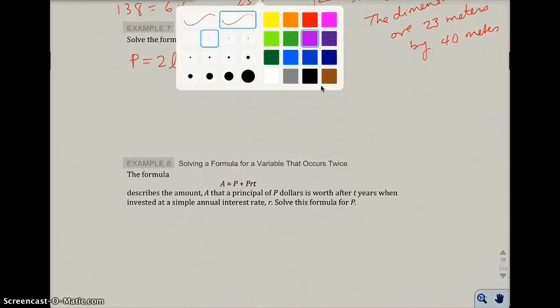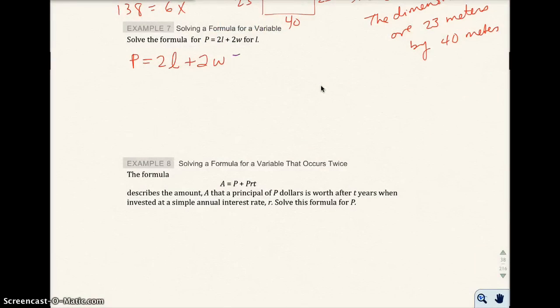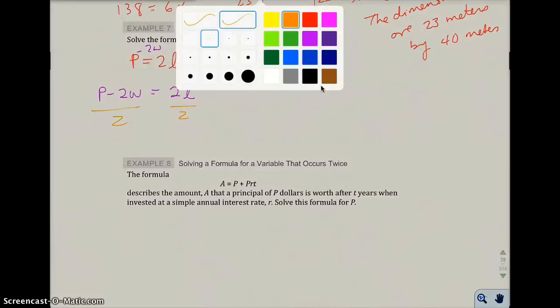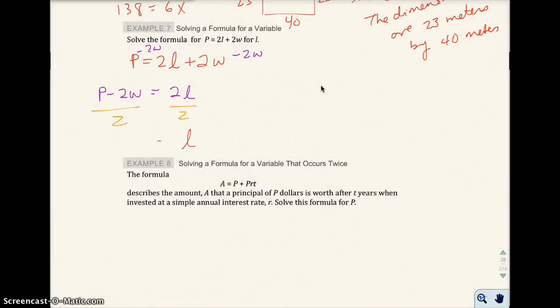To do that, I'm going to go ahead and get rid of everything around the L. I'm going to get rid of this 2W by subtracting 2W from both sides. And I'll have P minus 2W equals 2L. And I can't combine these because I don't have like terms, so I just don't even bother. I want to get L alone, so I'm going to divide both sides by 2. So L equals P minus 2W over 2.